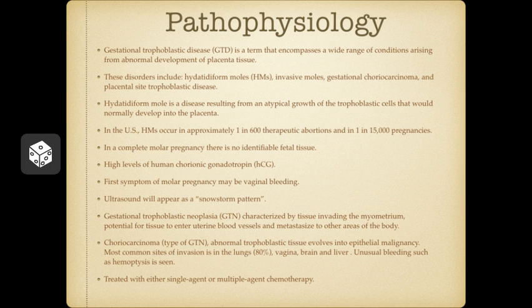HMs occur in approximately one in 600 therapeutic abortions and one in 15,000 pregnancies. As with the case study, the patient had a history of two spontaneous abortions and presented with grape-like structures during examination. Also, during a molar pregnancy, there is no identifiable fetal tissue on ultrasound. An indicator of this disease is high levels of HCG — human chorionic gonadotropin — because the rapid growth of trophoblastic tissue produces unusually high levels of HCG.